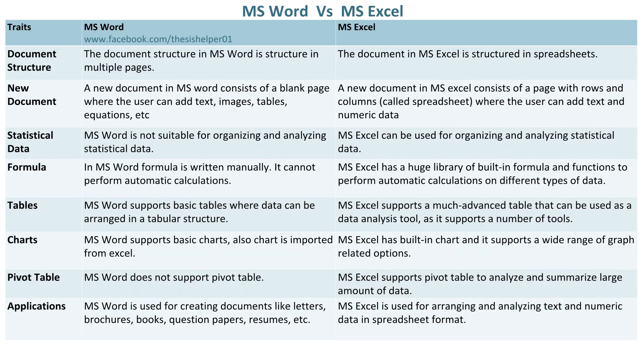The document structure in MS Word is structured in multiple pages. Whereas, the document in MS Excel is structured in spreadsheets. A new document in MS Word consists of a blank page where the user can add text, images, tables, equations, etc. Whereas, a new document in MS Excel consists of a page with rows and columns, called a spreadsheet, where the user can add text and numeric data.